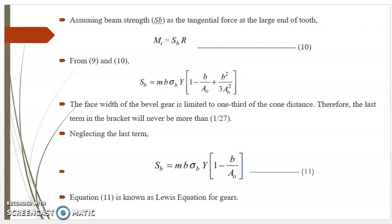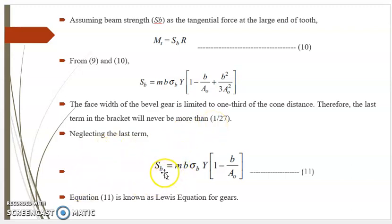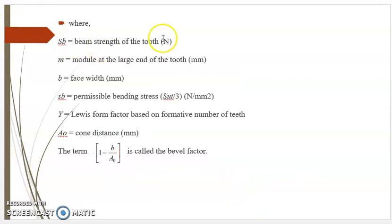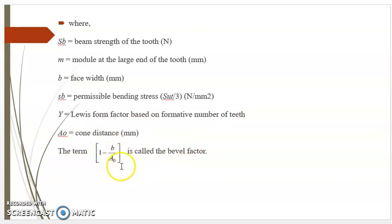Assuming beam strength Sb as the tangential force at the large end of the tooth, mt equals Sb·R — equation 10. From equations 9 and 10, Sb equals m·sigma_b·y·[1 minus b/A0 plus b²/(3·A0²)]. The face width of bevel gears is limited to one-third of the cone distance, so the last term in the bracket will never exceed 1/27. Neglecting the last term gives: Sb equals m·sigma_b·y·(1 minus b/A0) — equation 11. This is known as Lewis's equation for bevel gears, where Sb is beam strength in Newton, M is module at the large end, B is face width, sigma_b is permissible bending strength equal to Su·(2/3) N/m², y is the Lewis form factor based on formative number of teeth, A0 is cone distance, and the term (1 minus b/A0) is called the bevel factor.